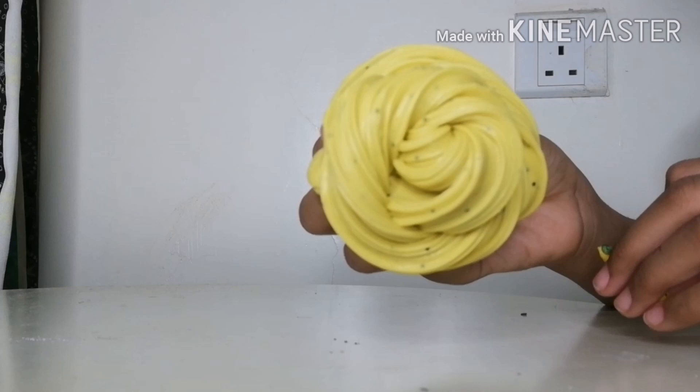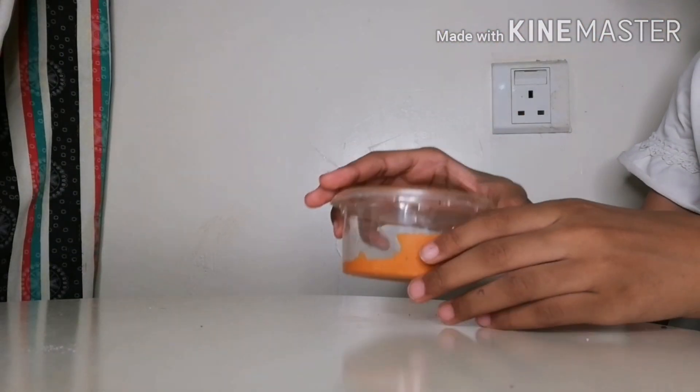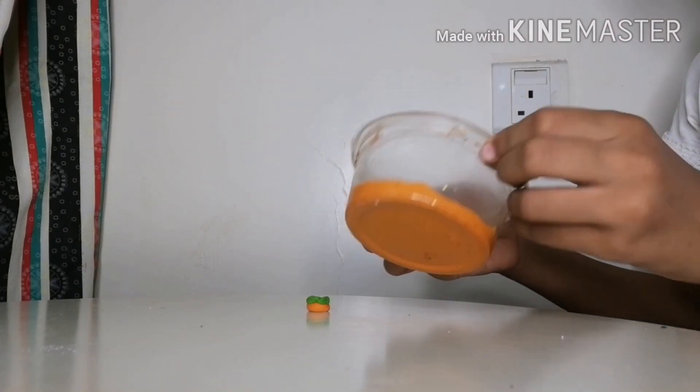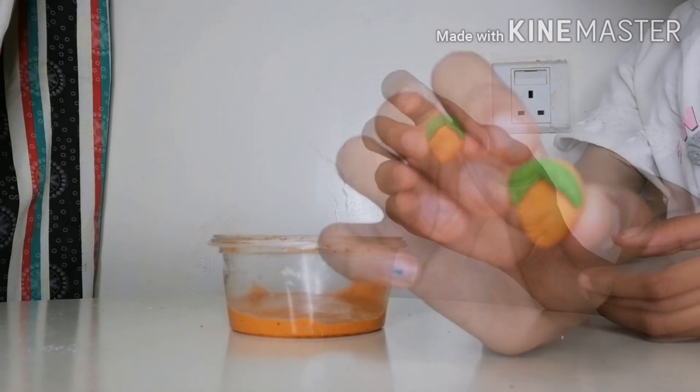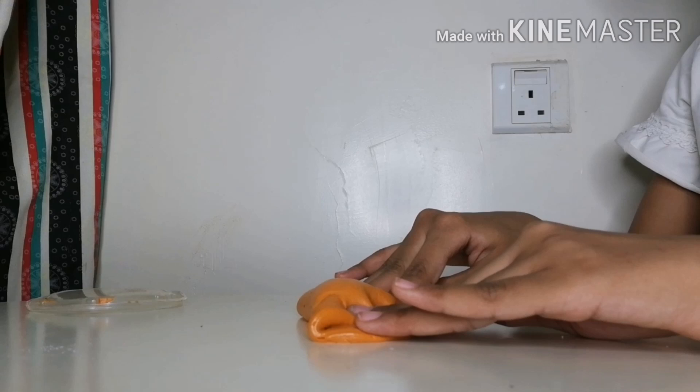Now enjoy watching. Next is this mango themed slime. It has a bright orange color. I use acrylic paint to color all the slimes. Tell me which one you like the most down below.